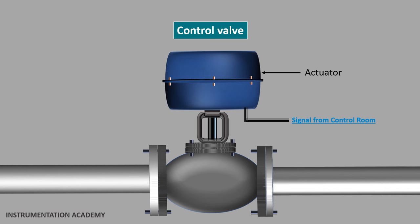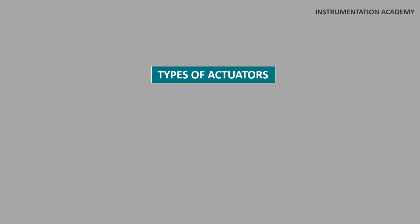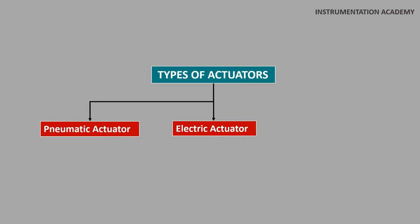The actuator is the major part of the control valve which operates the valve. The actuator would operate according to the signal received from the control room. There are mainly three types of actuators: pneumatic actuator, electric actuator and hydraulic actuator.